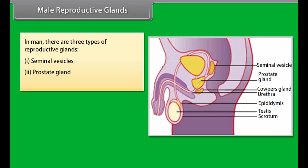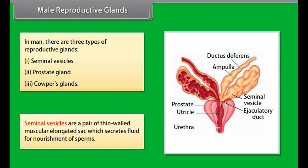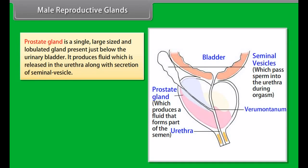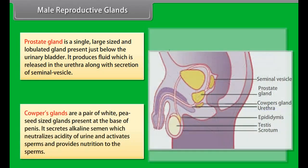The penis forms the external male genital organ. It is a cylindrical erectile copulatory organ with thick muscular walls. Its sensitive tip is called the glans, which is covered by a retractile skin fold called the prepuce. In man, there are three types of reproductive glands: seminal vesicles, prostate gland, and Cowper's glands.